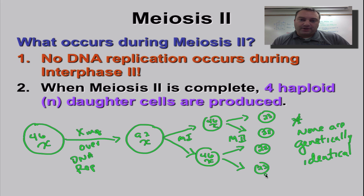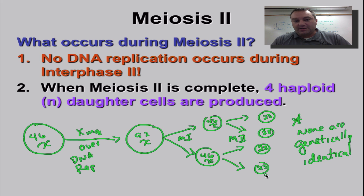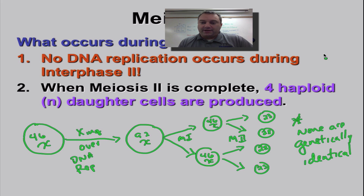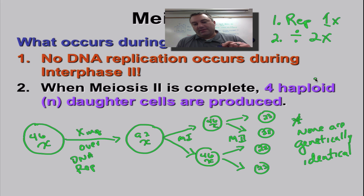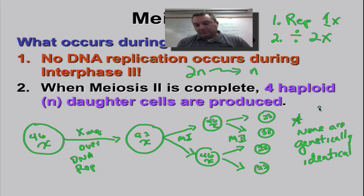We're going to stop this episode here. I went through this quickly because you should already understand what happens during prophase, metaphase, anaphase, telophase, and the other parts of mitosis — the same things are kind of happening here. But remember that during meiosis, you're going to do DNA replication once, but divide two times. This is why you get reduction division — cutting your chromosomes from diploid all the way to haploid. The purpose of that is to make gametes so that you can do sexual reproduction.